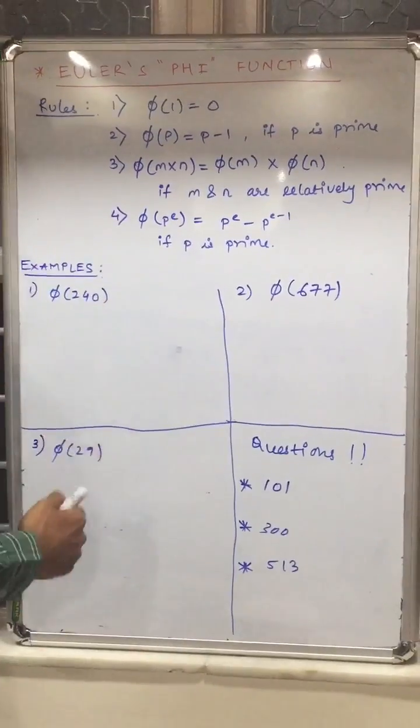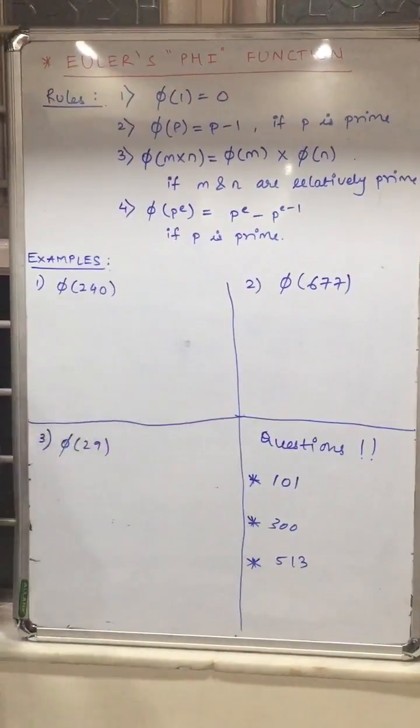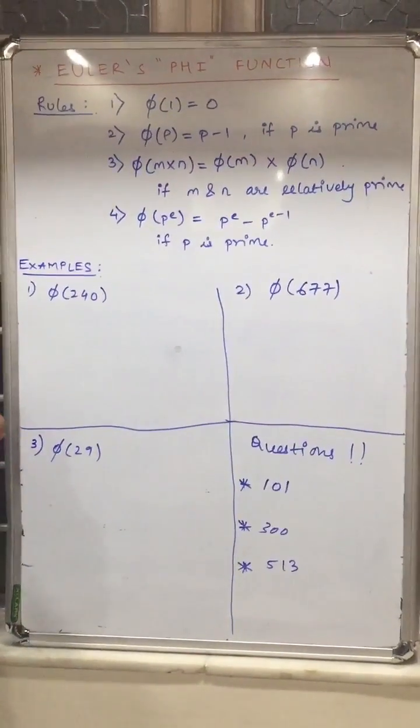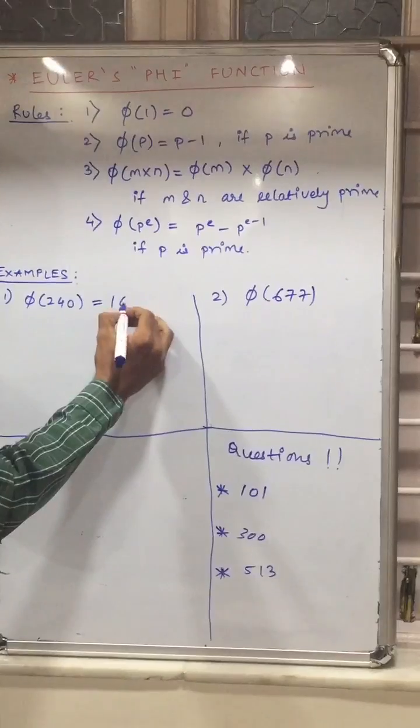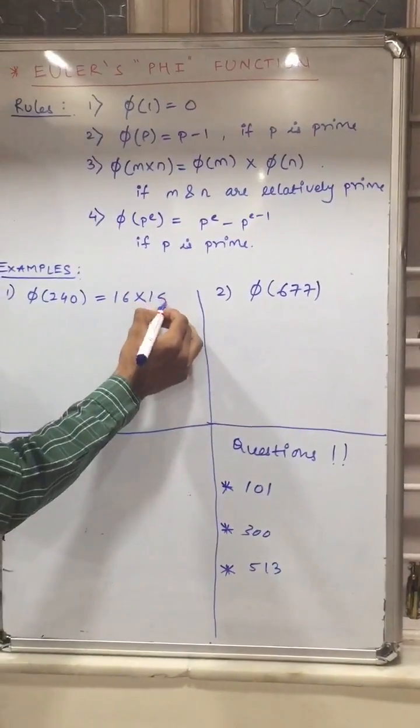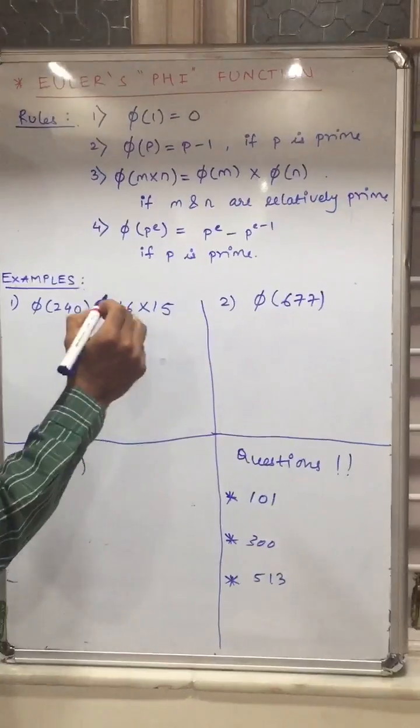So now let's take example of phi of 240. You have to just divide in the factors form. So it will be 16 into 15. We have to divide in such a way that it should be in prime number.